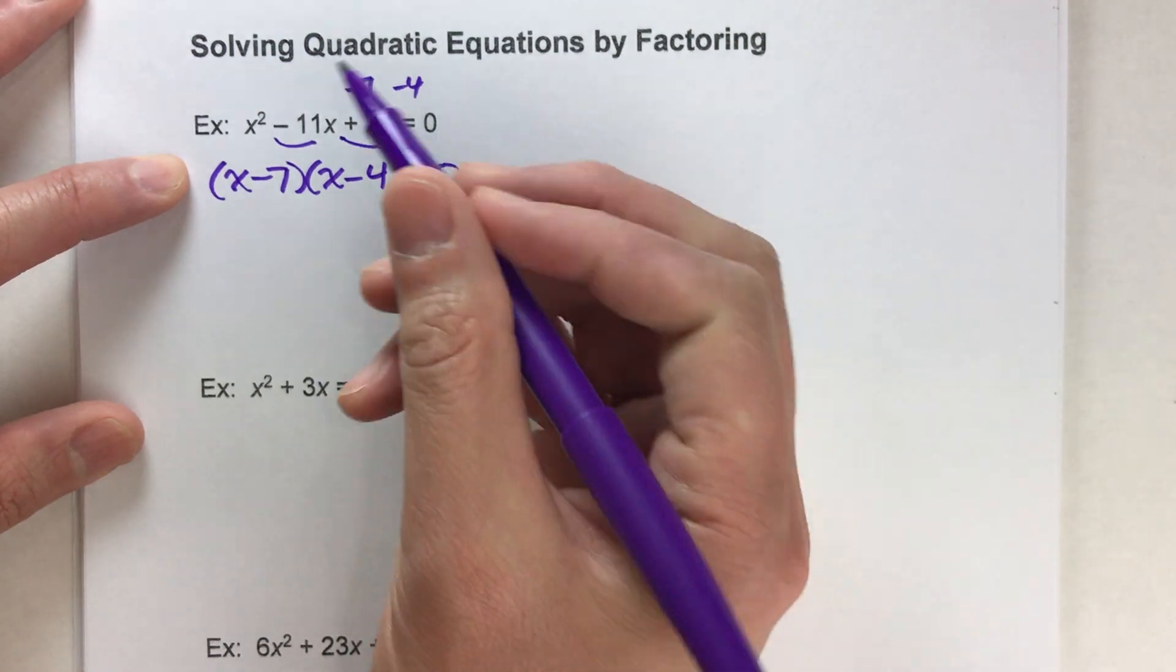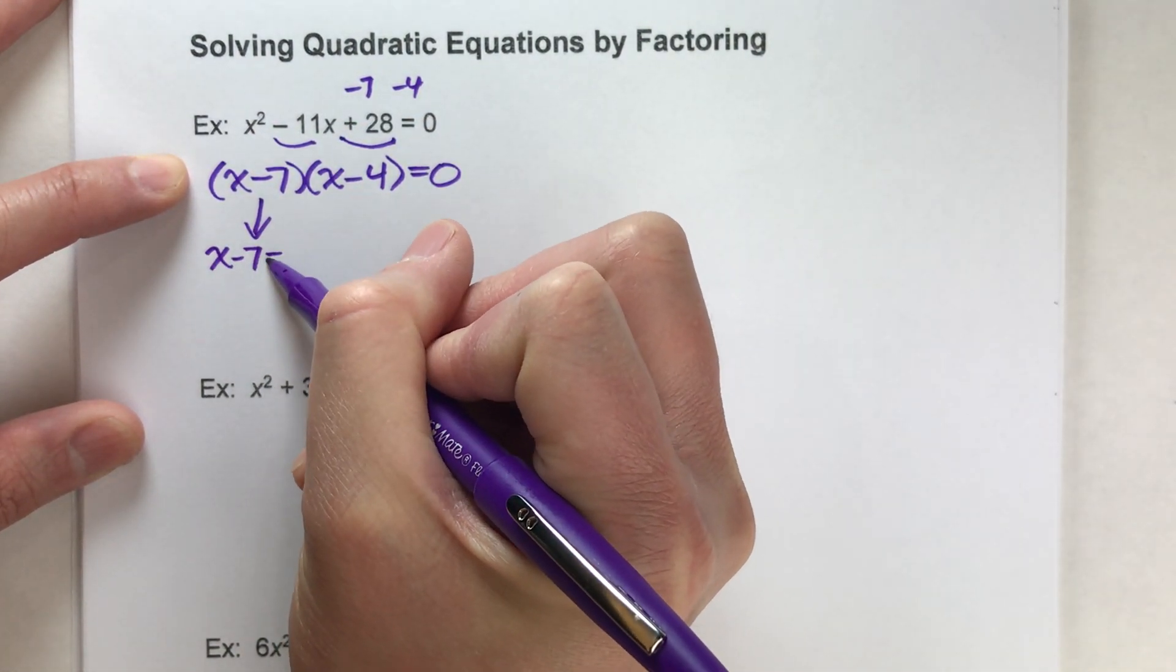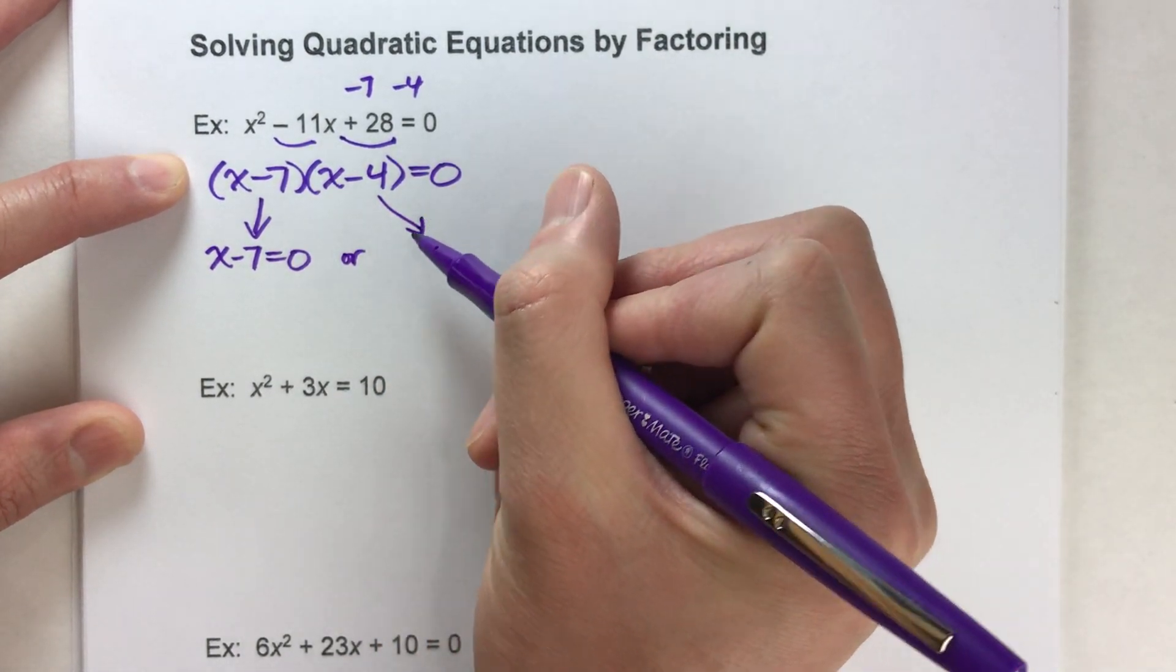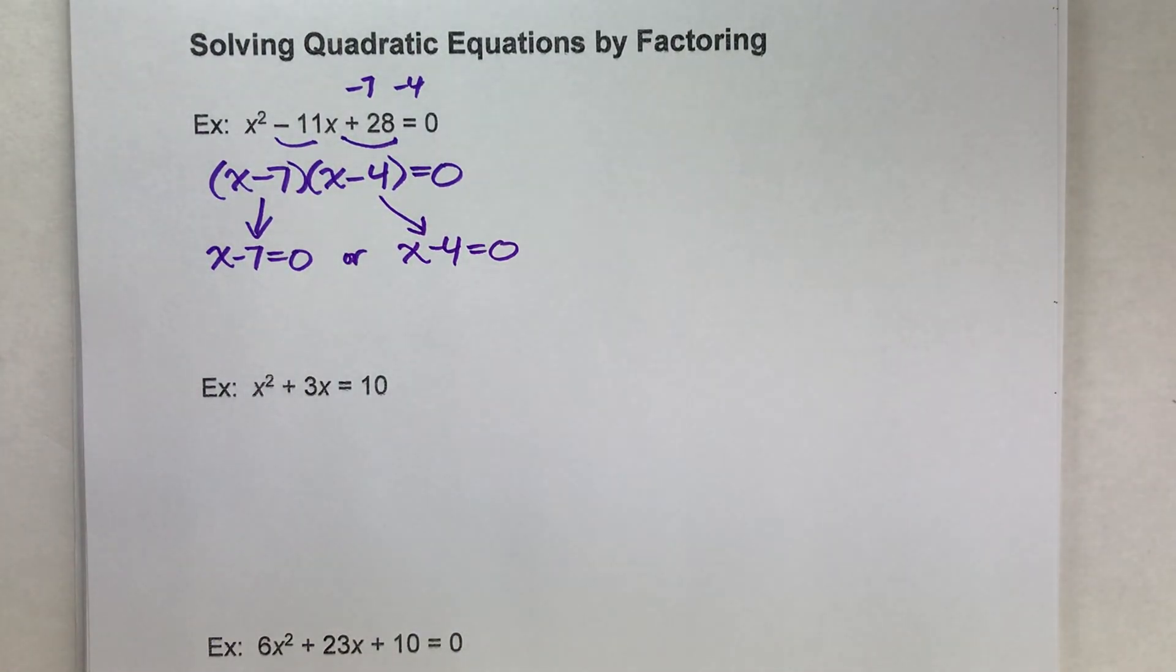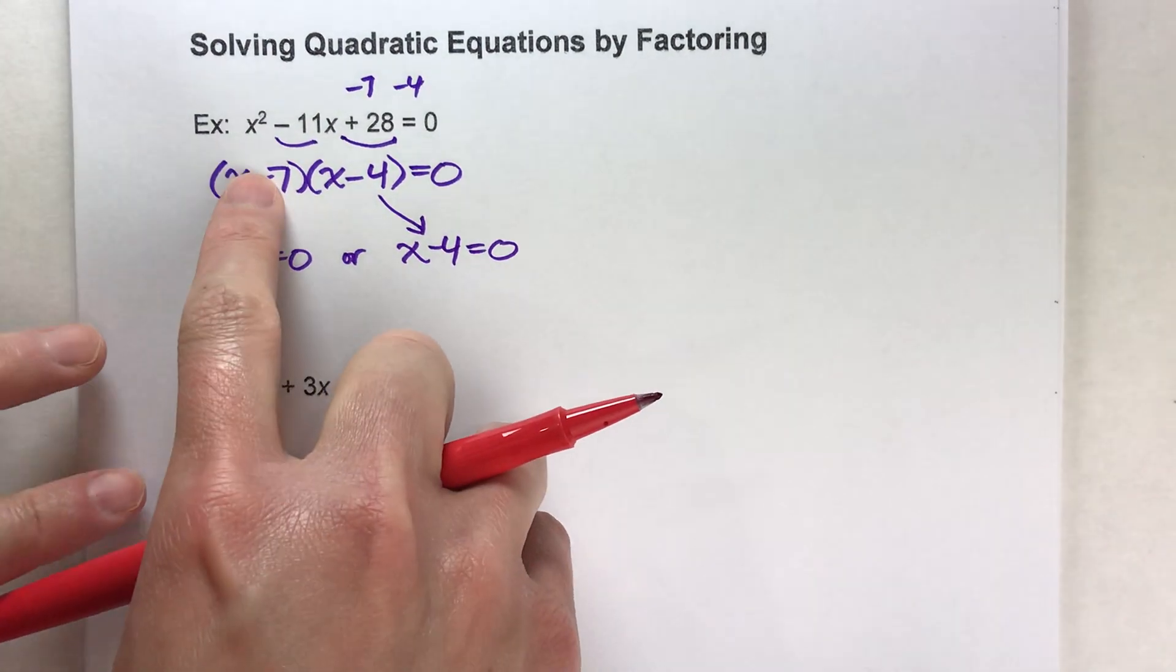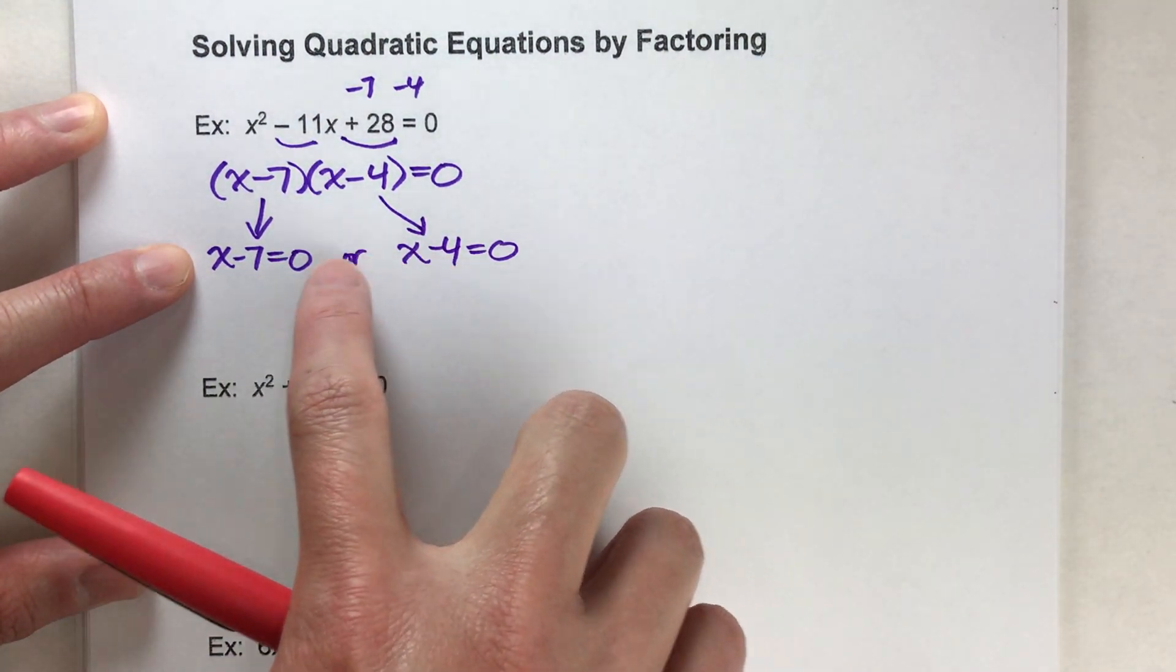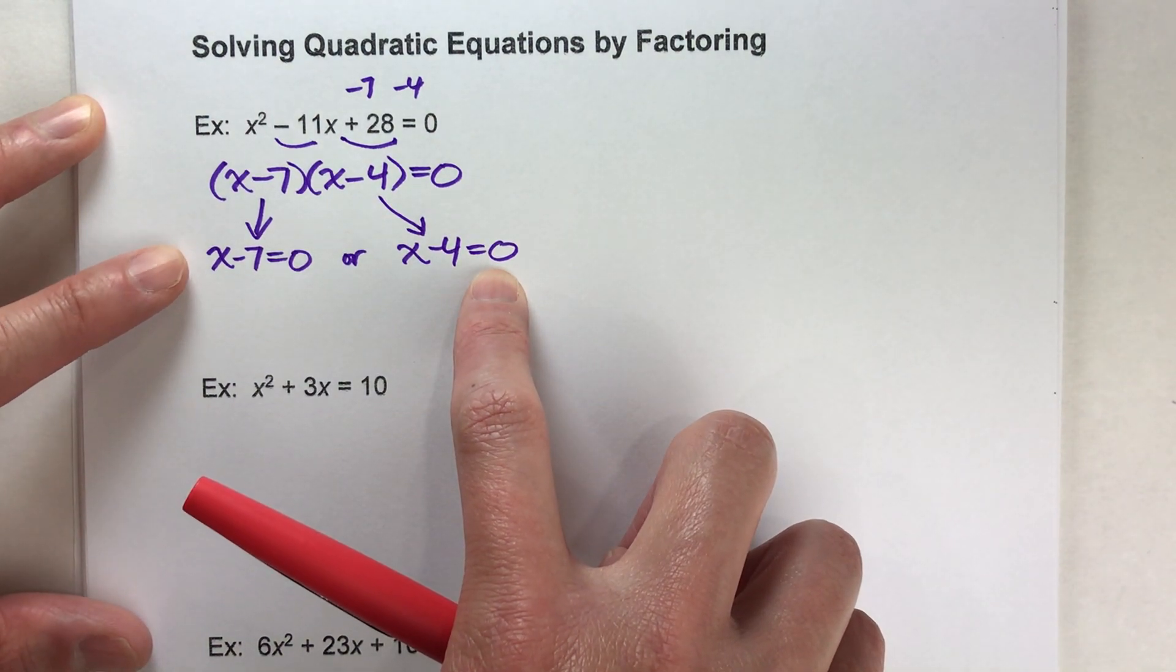So that tells us that either this x minus 7 has to be zero or this one over here, x minus 4, has to be zero. One of those two has to be zero in order for this times this to equal zero. So if we can solve these two little equations, we can figure out the possible values of x.